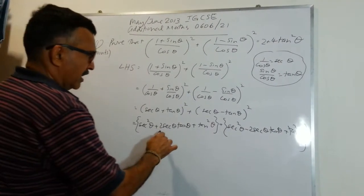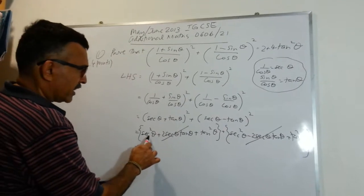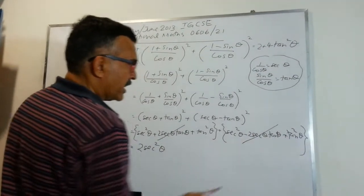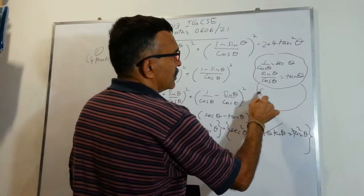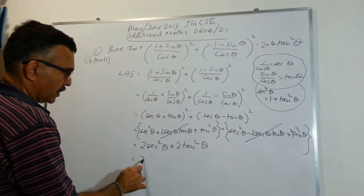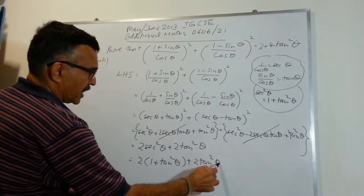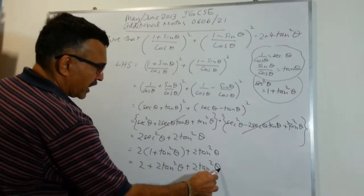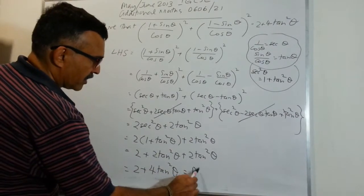Now things look pretty good. The +2secθ·tanθ and −2secθ·tanθ cancel. So we are left with 2sec²θ + 2tan²θ. Now, we also need to know that sec²θ = 1 + tan²θ. Substituting, we get 2(1 + tan²θ) + 2tan²θ, which gives 2 + 2tan²θ + 2tan²θ, and that equals 2 + 4tan²θ — which is exactly the right-hand side.